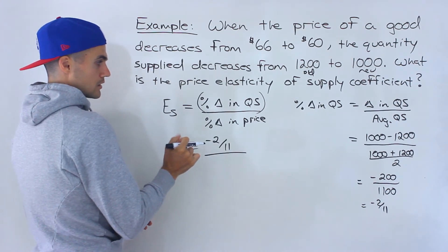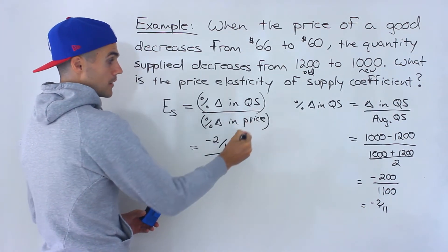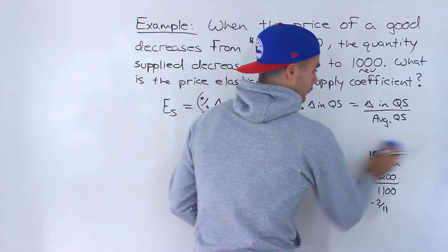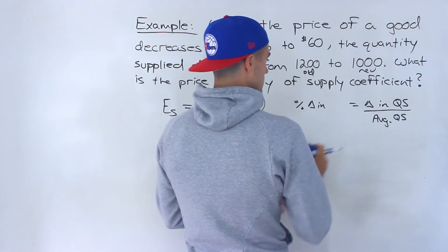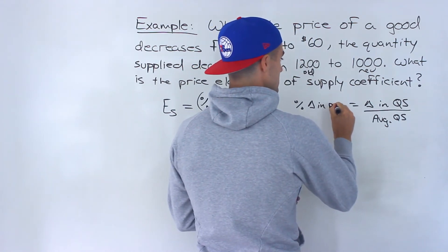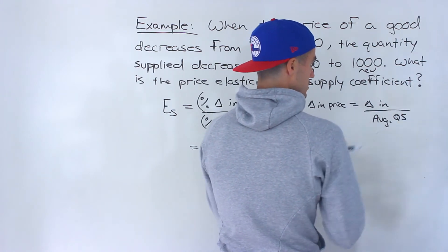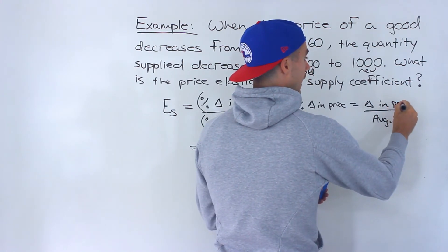And then what we can do is figure out what this denominator is, the percentage change in price. It's going to be the exact same formula, but now we're going to be dealing with the price. So this is going to be change in price, the actual change in price, the dollar amount over the average price.